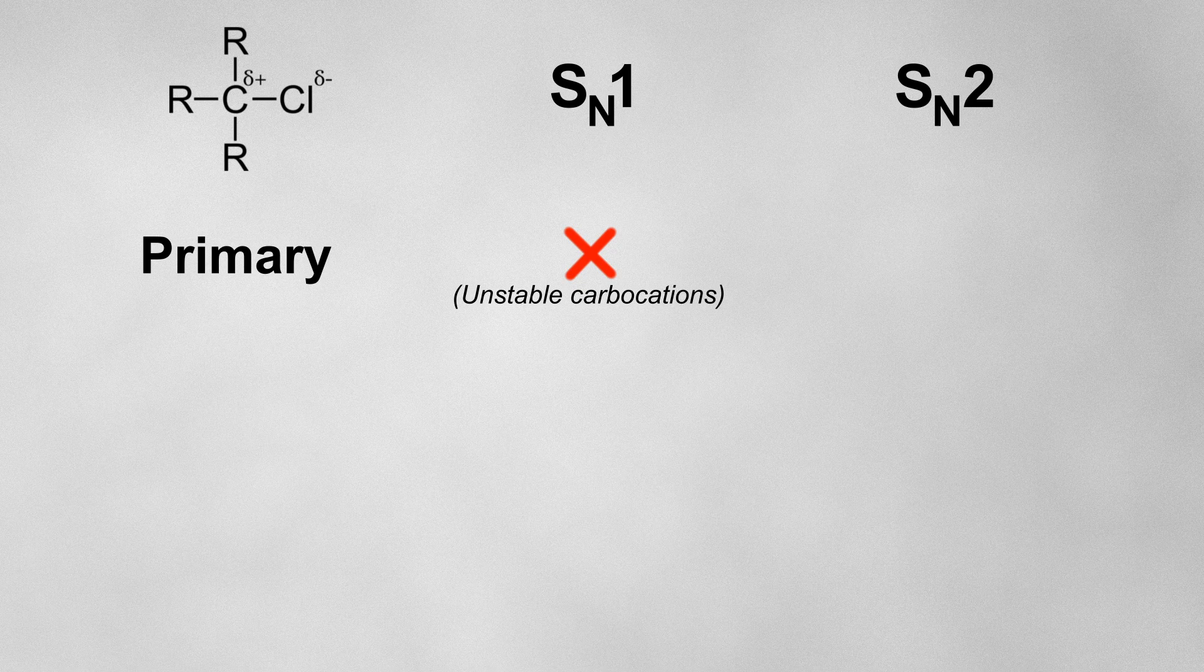So, to summarize this, primary halogeno alkanes don't tend to undergo SN1 because they would form unstable carbocations, and instead tend to undergo SN2 because of low steric hindrance.